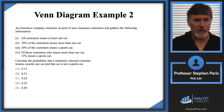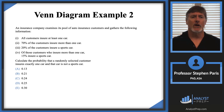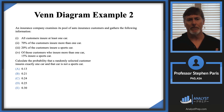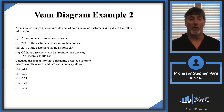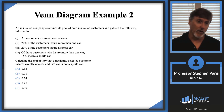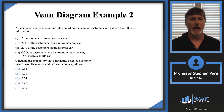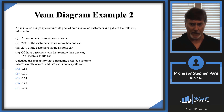Now let's look at another example. An insurance company examines its pool of auto insurance customers. All customers insure at least one car. 70% insure more than one car. 20% insure a sports car. And of those customers who insure more than one car, 15% insure a sports car. We're asked to calculate the probability that a randomly selected customer insures exactly one car that is not a sports car.